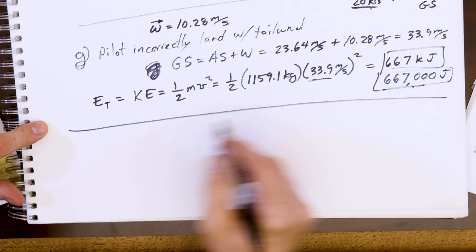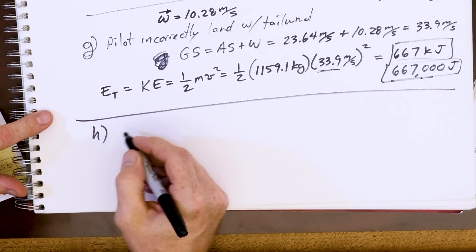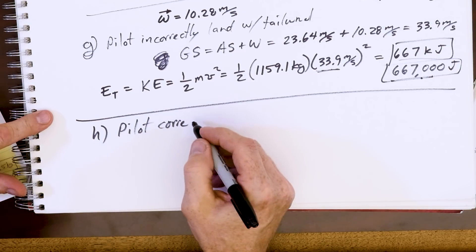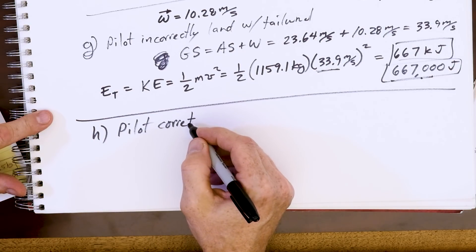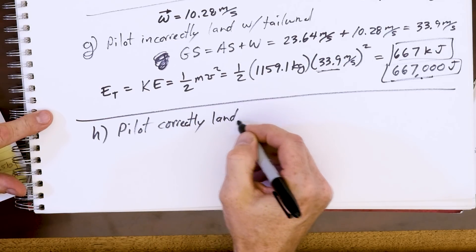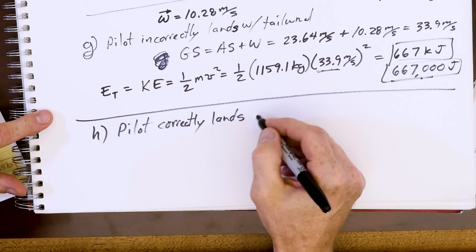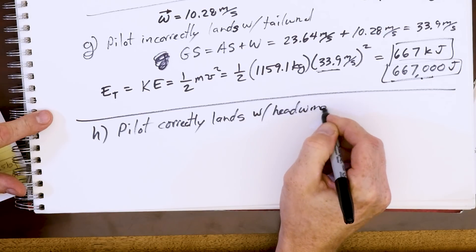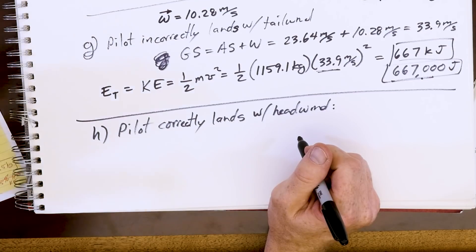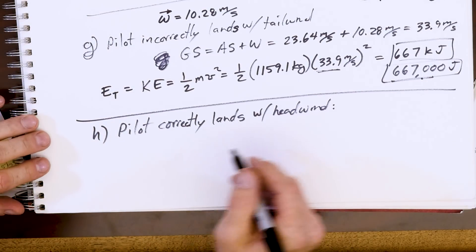Part H: pilot correctly lands with a headwind. They did a good job, they took their time, they looked at flags, smoke, etc., and they picked a good field that had a headwind.